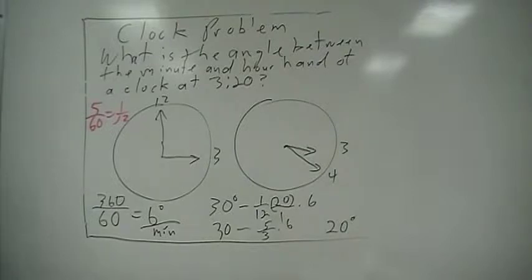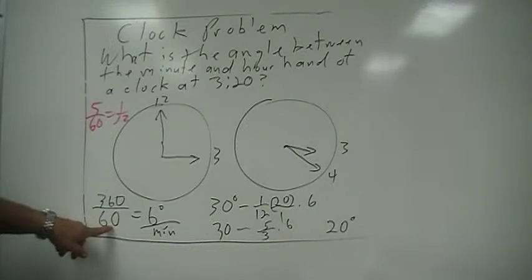The key to this is understanding that 360 degrees in a circle, and there's 60 minutes in a circle, so that leaves 6 degrees per minute.